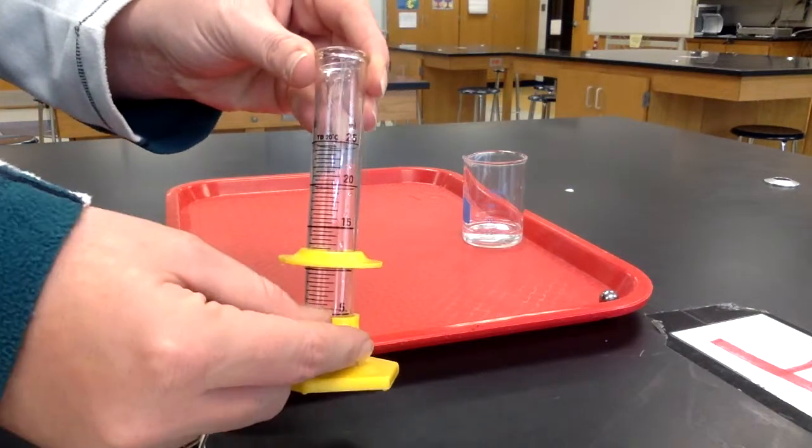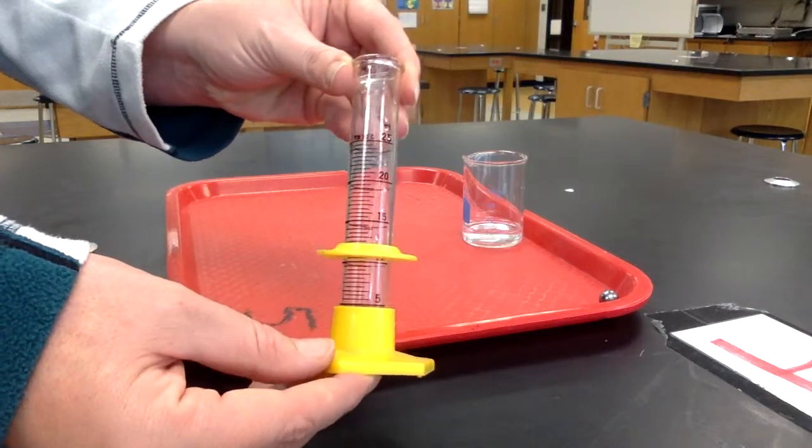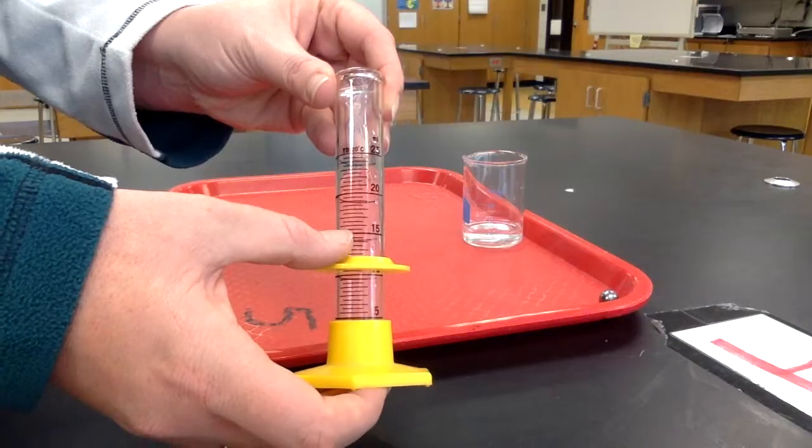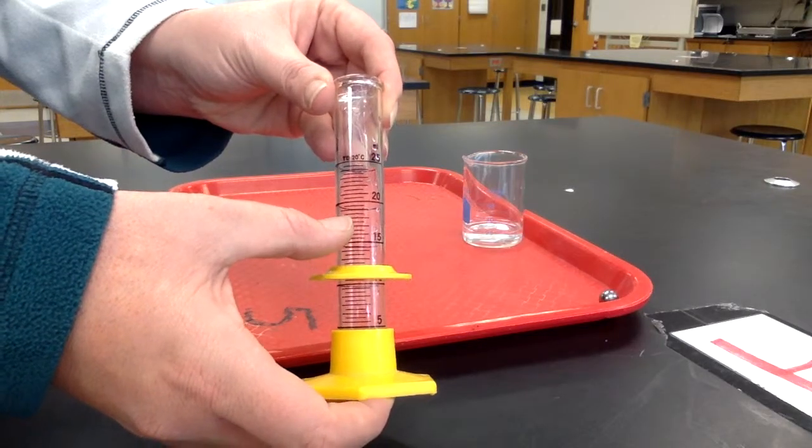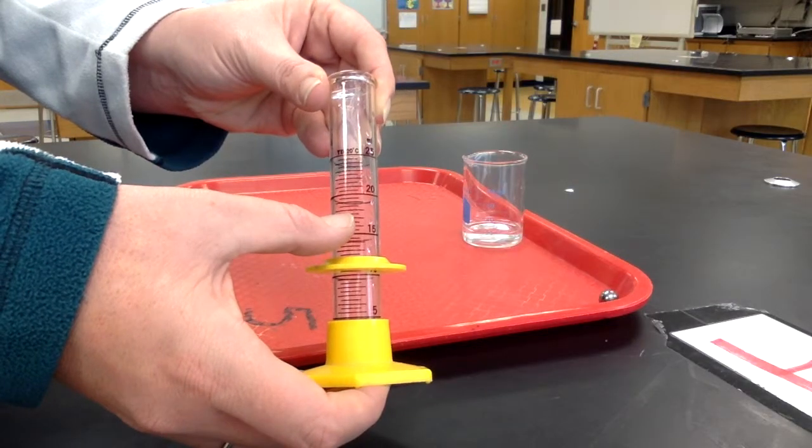The graduated cylinder has a scale on the side. This scale counts by ones or point fives. The bigger lines represent the ones and the smaller lines represent 0.5.